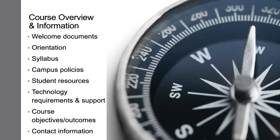Standard one is course overview and information. This includes welcome documents, orientation of students not only to your course but to the LMS, your syllabus, and campus policies — such as social media use, ADA compliance, or academic integrity. Linking to those campus policies is important. Also include student resources such as tutoring or offices for student accommodations, technology requirements — if students need a computer, webcam, or certain software or hardware — and what support is provided for each of those things.